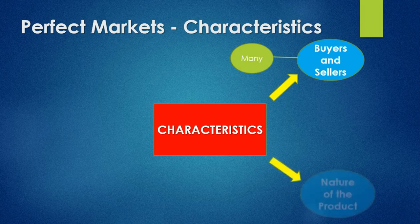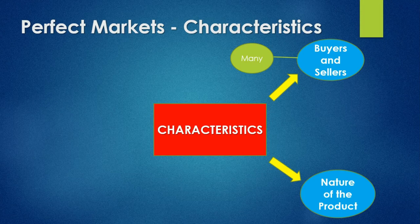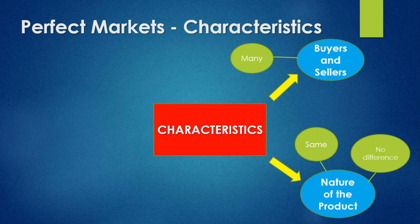The second characteristic we look at is the nature of the product. What kind of product is being sold? They are selling the same product in this market, and there's no real difference between these goods. So consumers will just go and buy it at the next shop if they cannot find it at the original one.